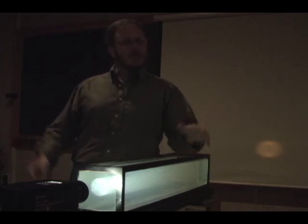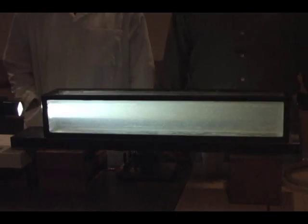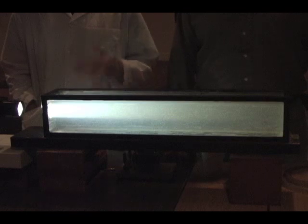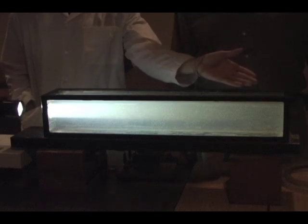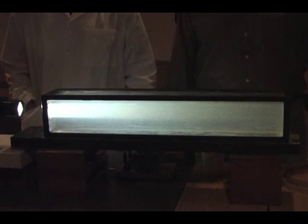But those blue photons have to go somewhere. If you look at the light traveling through the tank of water, you'll notice that it appears bluer closer to the light source than it does farther from the light source. This is because the blue photons are scattered out of the tank before they make it all the way through.